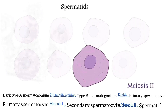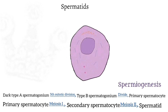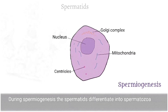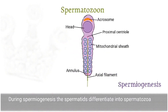And now comes spermiogenesis. We often tend to confuse between the terms spermatogenesis and spermiogenesis when reading the topic for the first time. Spermiogenesis is the series of changes resulting in the transformation of spermatids into what we finally call the spermatozoa, or the sperms.